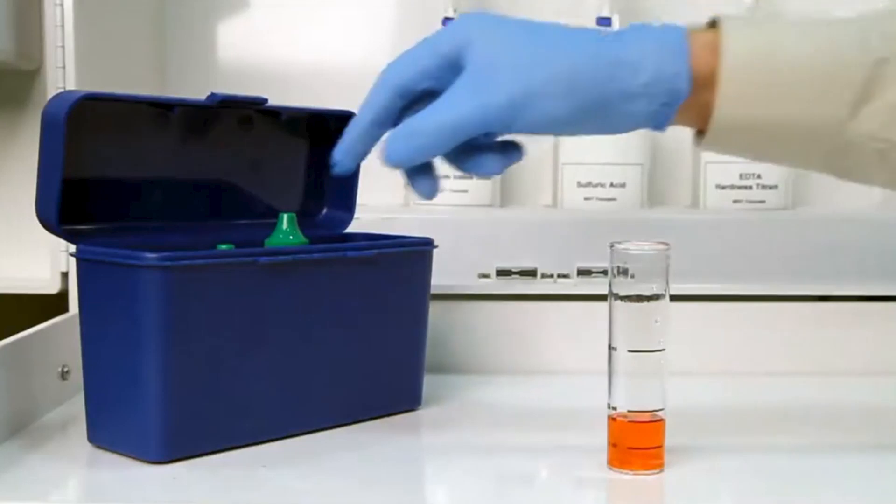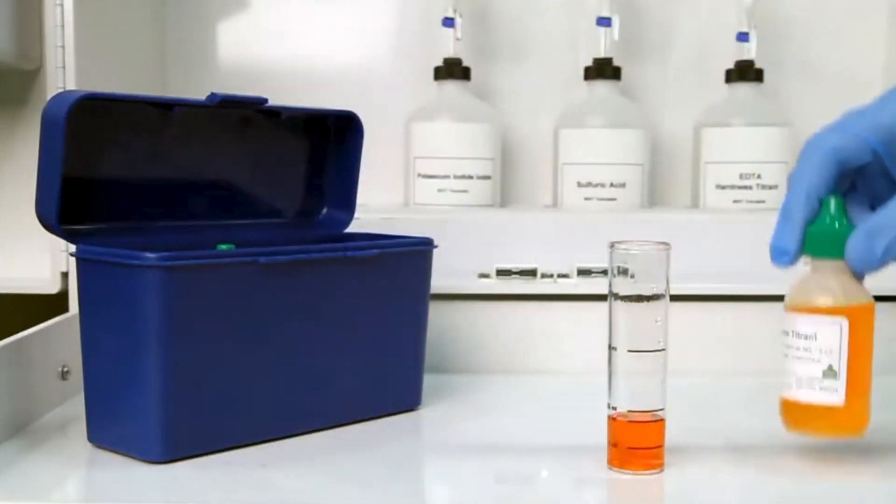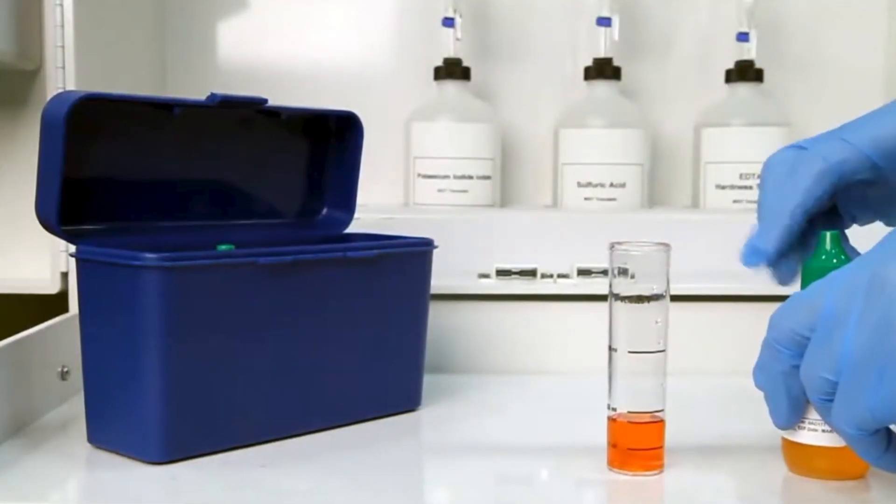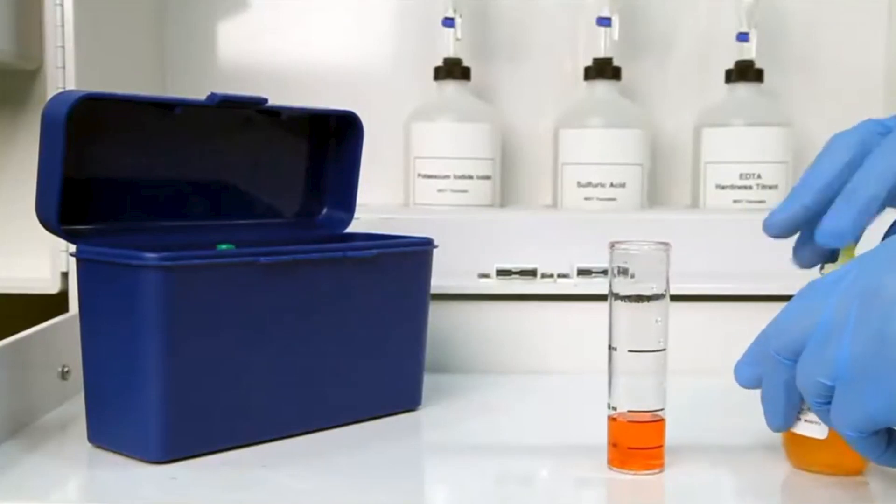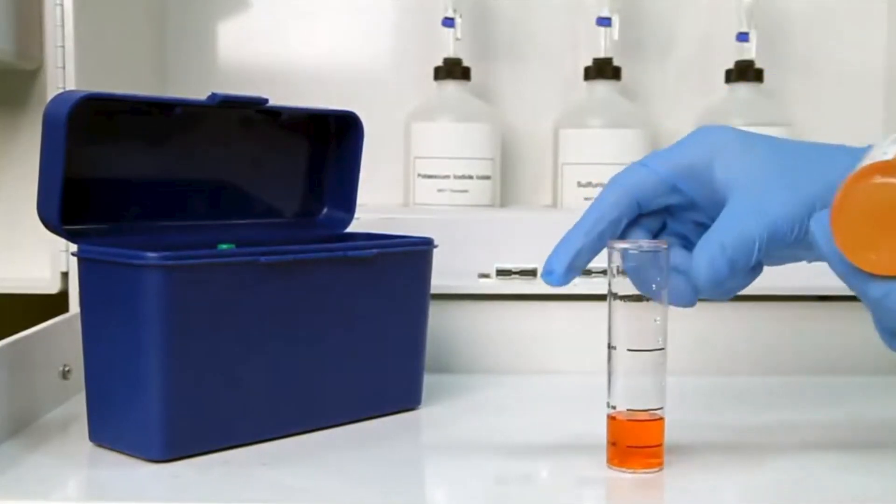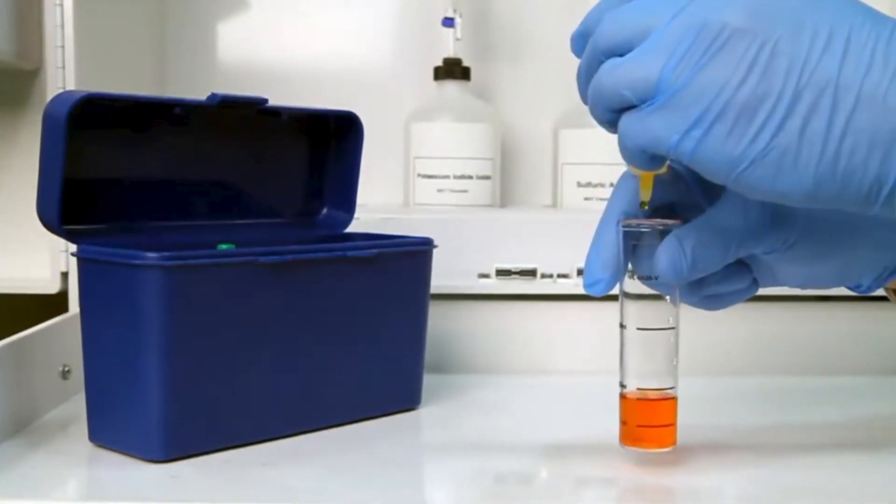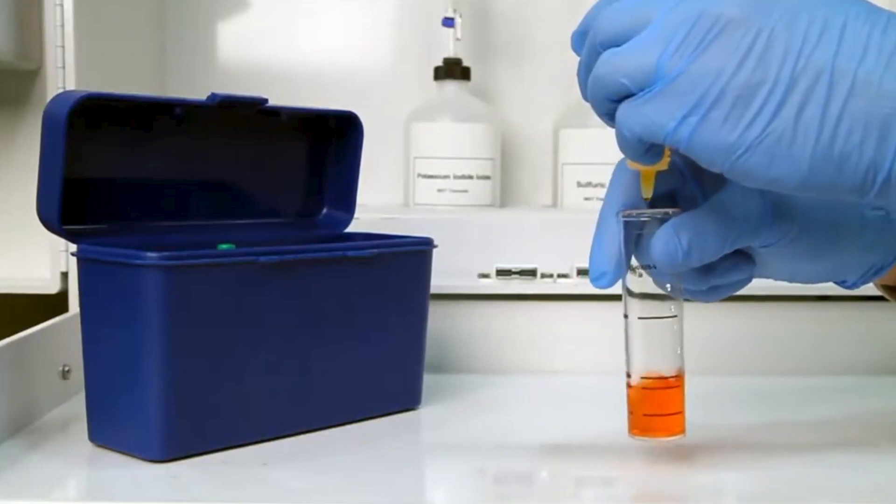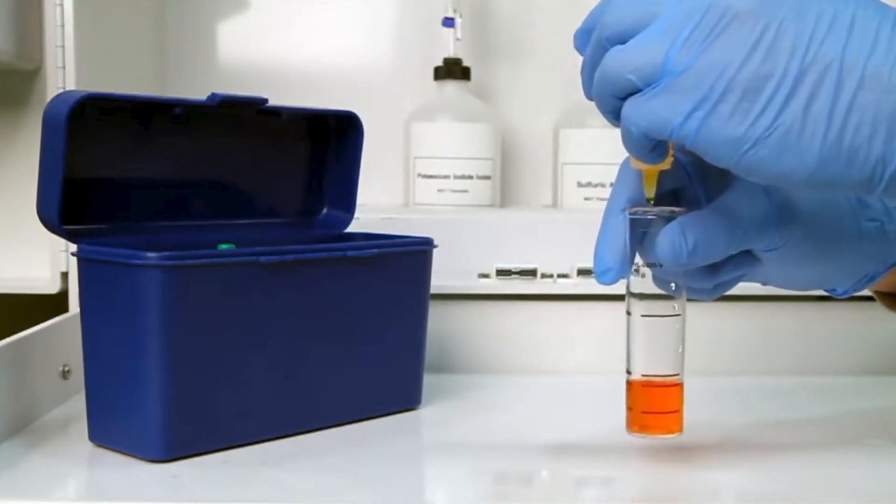The next step according to the EndpointID procedure is to perform the titration. It's important to make sure you have the proper titrant and the proper sample size for this titration. Remember to hold the bottle vertically to make sure you get a consistent drop size.